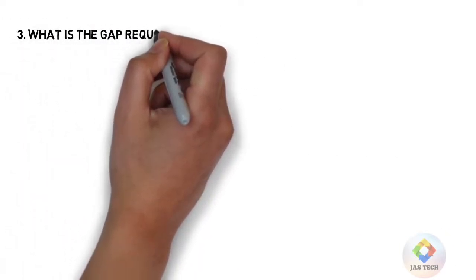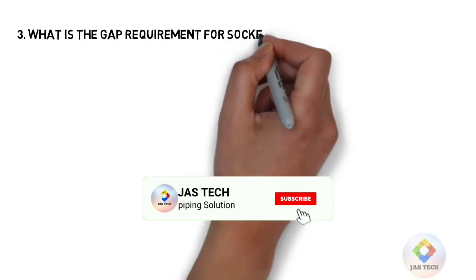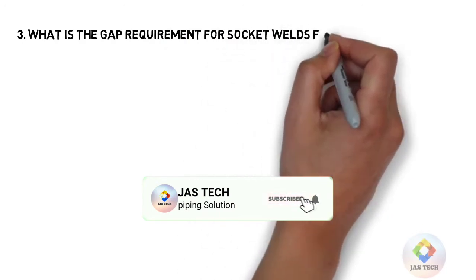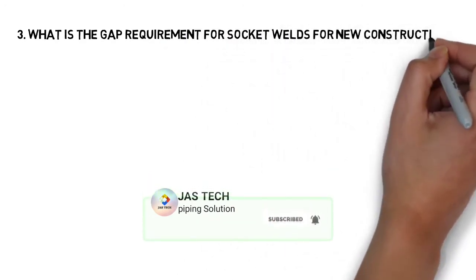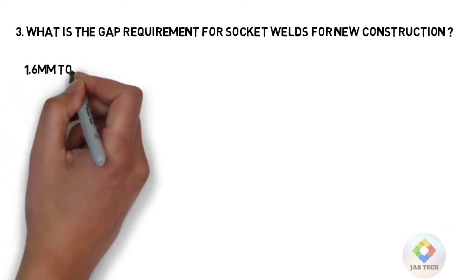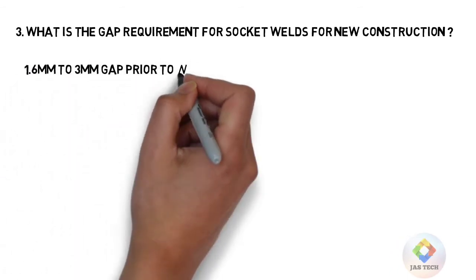Q3: What is the gap requirement for socket weld for new construction? Answer: 1.6mm to 3mm gap prior to welding.